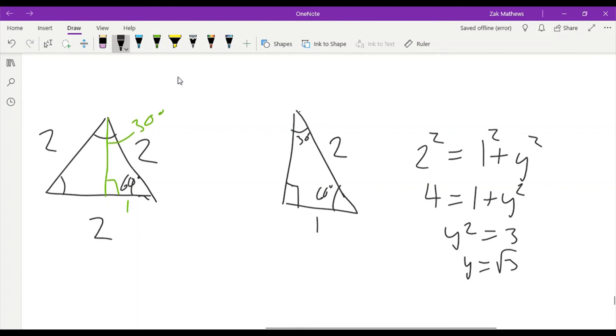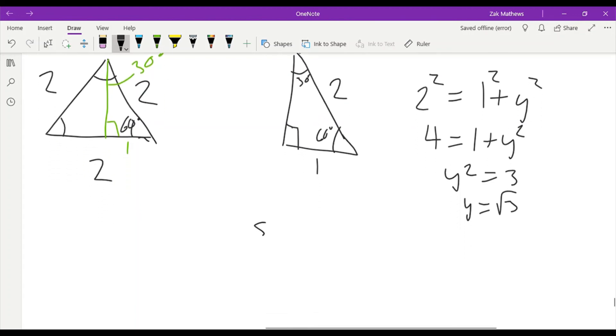And just like we did a second ago, I can now define sine and cosine for both of these angles. We actually get two sets of angles in this triangle. So let me look at sine of 30. Sine of 30, the opposite is the one. The hypotenuse is the two. Cosine of 30, the adjacent is the thing that we just found, that root three. So we get root three over two.